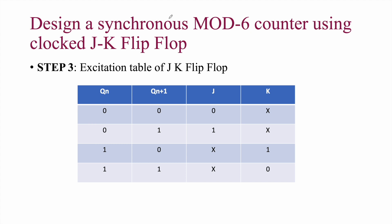Step 3 is to identify the flip-flop to use. Sometimes the question specifies it; here we are told to use a JK flip-flop. Therefore we take the excitation table of the JK flip-flop: present state 0 → next state 0 gives J=0, K=X; present 0 → next 1 gives J=1, K=X; present 1 → next 0 gives J=X, K=1; present 1 → next 1 gives J=X, K=0.